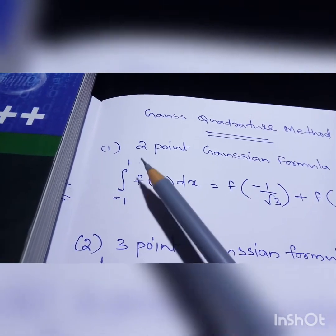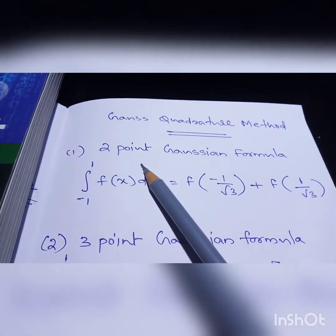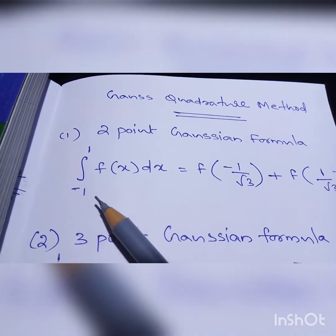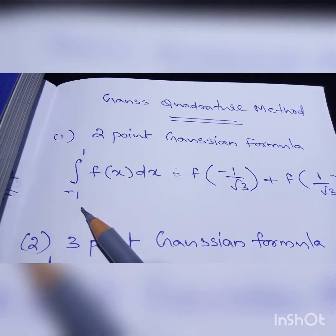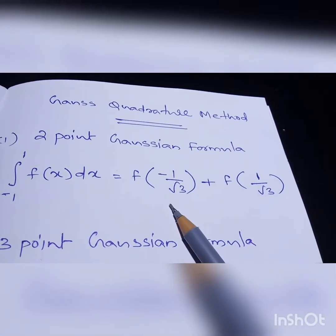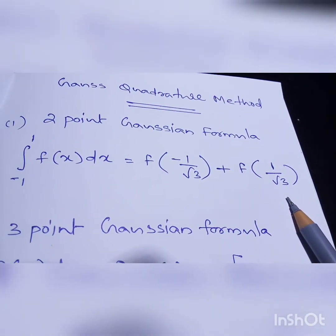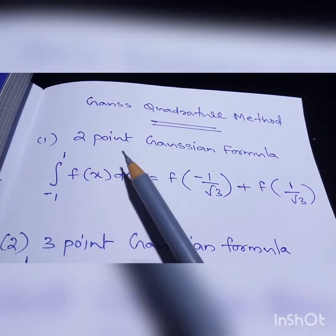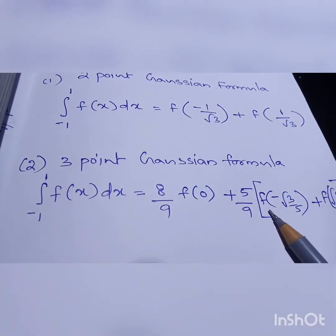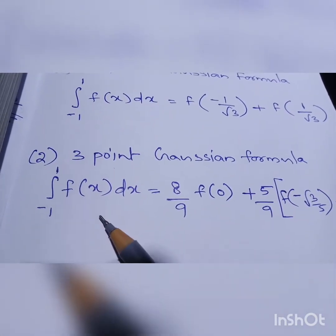Two methods are there in this Gauss Quadrature technique. The first one is the two-point Gaussian formula. For that, the formula is: integration of minus 1 to 1 of f(x) dx is equal to f(-1/√3) plus f(1/√3). That is the formula for the two-point Gaussian equation.